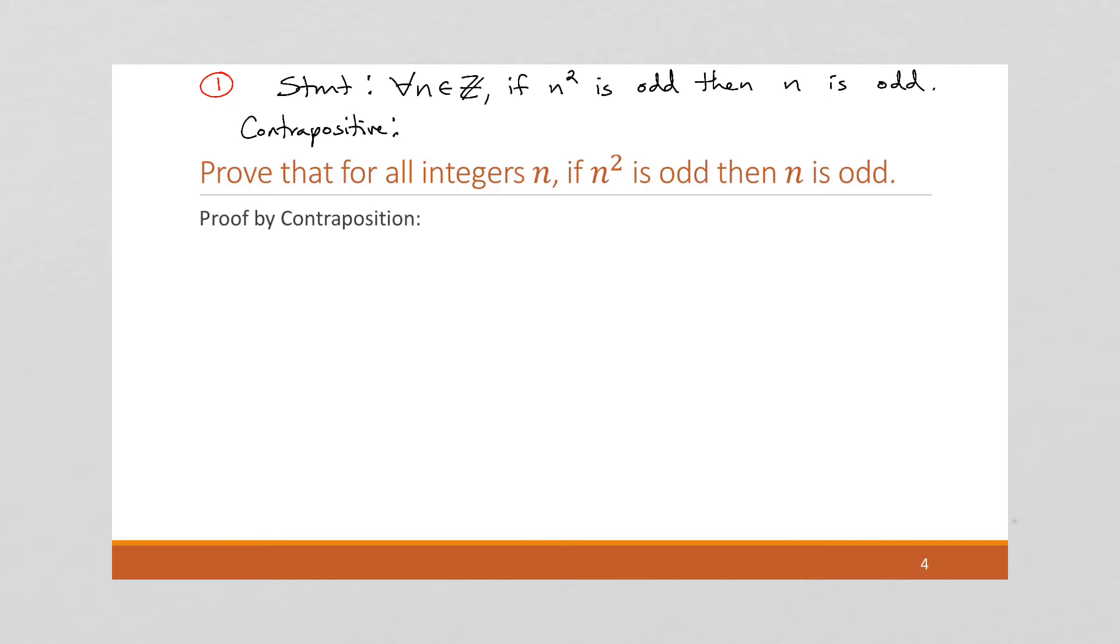So the contrapositive of this is going to be for all n in the integers, if we take the negation of the second part of our statement—if n is not odd, or if n is even—then now we take the negation of the first part of our statement. This is why I made such a big deal about you becoming comfortable converting a statement into its negation, its contrapositive, its converse, its inverse.